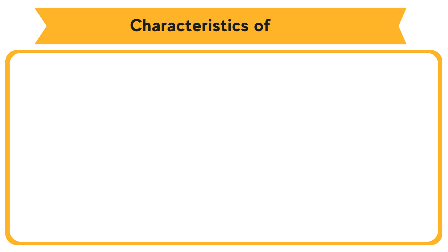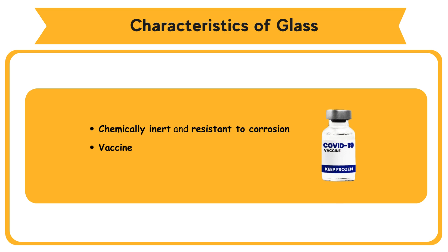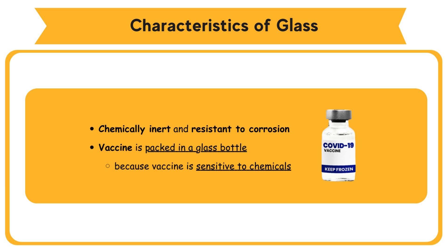Characteristics of Glass: Chemically inert and resistant to corrosion. Vaccine is packed in a glass bottle because vaccine is sensitive to chemicals. Glass bottle is chemically inert, hence it is ideal for storing vaccine.